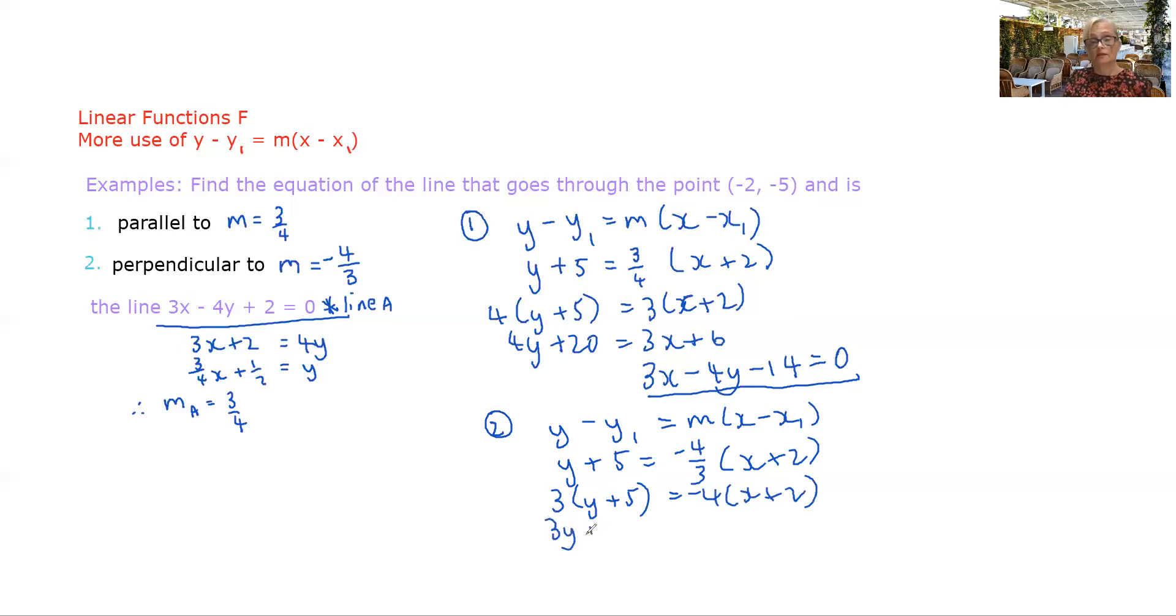Expand both sides and we want to have a positive x term usually so I'm going to bring everything over this side so 4x + 3y + 23 = 0. That would be that equation there.